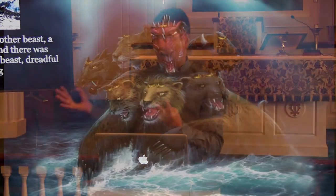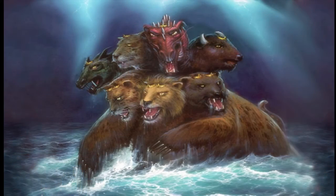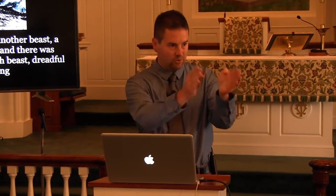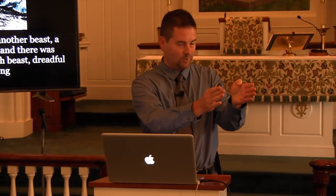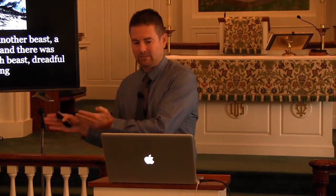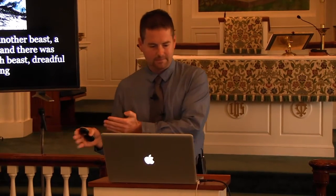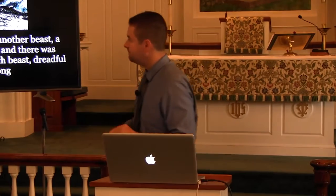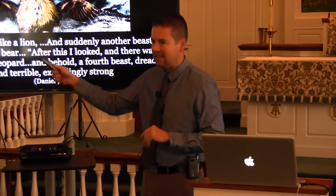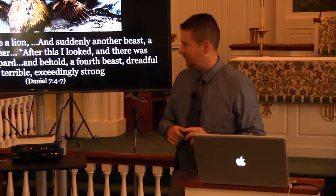You may have noticed that John lists those beasts in the opposite order. John sees a beast like a leopard, a bear, and a lion. Daniel is looking into the future. And what is John doing? John is looking into the past fulfillment. Now, you'll notice, if you study out Daniel 7:4 through 7, it gives you the same number of heads.